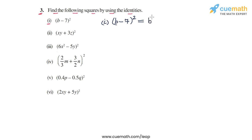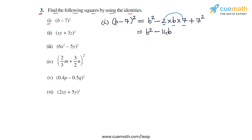We can write this as b squared minus 2 times b times 7 plus 7 squared. So we get b squared, then minus 2 times b times 7 — since 2 times 7 is 14, we get minus 14b — and then 7 squared is 49, so we get plus 49. The expression b squared minus 14b plus 49 is the answer for part 1.